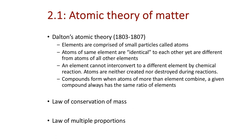Dalton postulated that elements are comprised of particles we can think of as atoms, and that atoms of the same element would be more or less identical to each other. You may know about isotopes — that a given element can exist as two different isotopes, like carbon-12 versus carbon-13 — but at Dalton's time there was no thought of isotopes. The thought was that if we have copper and zinc, all copper atoms are identical to each other. Also, there's no chemical means to transform one element into another — copper is copper, zinc is zinc.